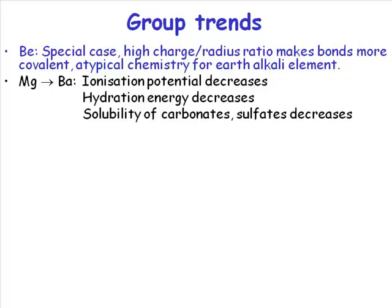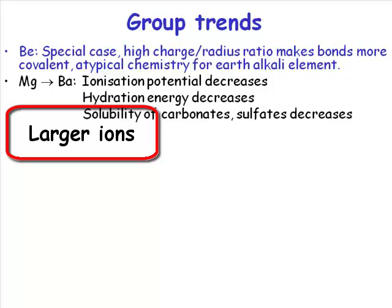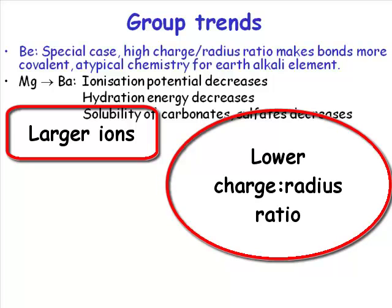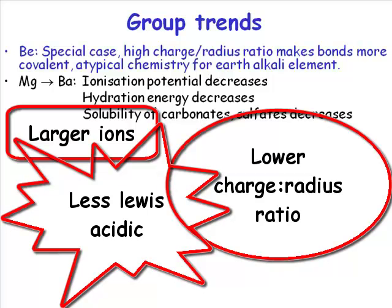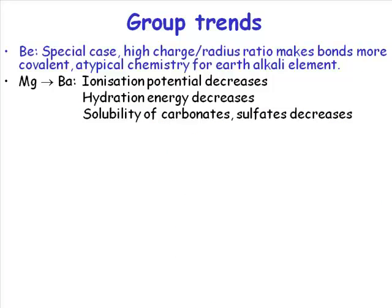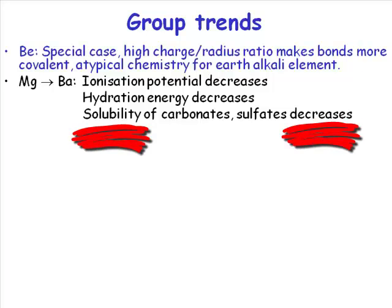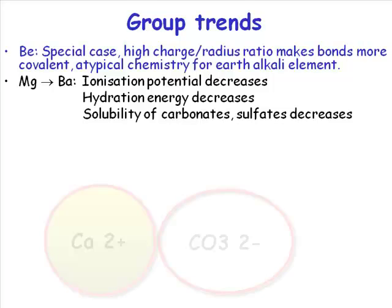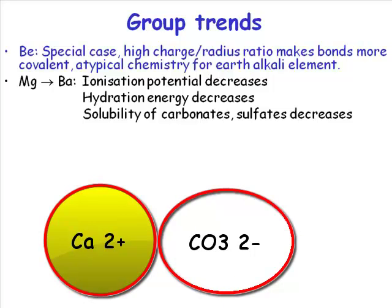Moving to the more typical group 2 metals — magnesium through to barium — the ionization potential is decreasing because we're moving further from the nucleus. The hydration energy is also decreasing, because they get bigger, and a lower charge-to-radius ratio makes them less Lewis acidic, so they bind water molecules more weakly. Because hydration energy is decreasing, the energy you get back when you dissolve something is decreasing, and the solubility of these species also decreases. So if you have a large 2+ cation and a large 2− anion like a carbonate or a sulfate, that's a recipe for a really very poorly soluble material.